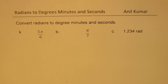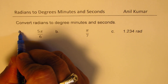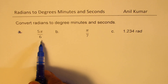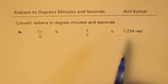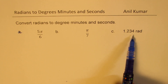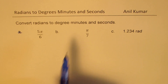I'm Adil Kumar, welcome to this video in which we'll try to understand how to convert angles given in radians to degrees, minutes, and seconds. We have three examples to discuss: the first is to convert 5π/6, the second is π/7, and the third is 1.234 radians.